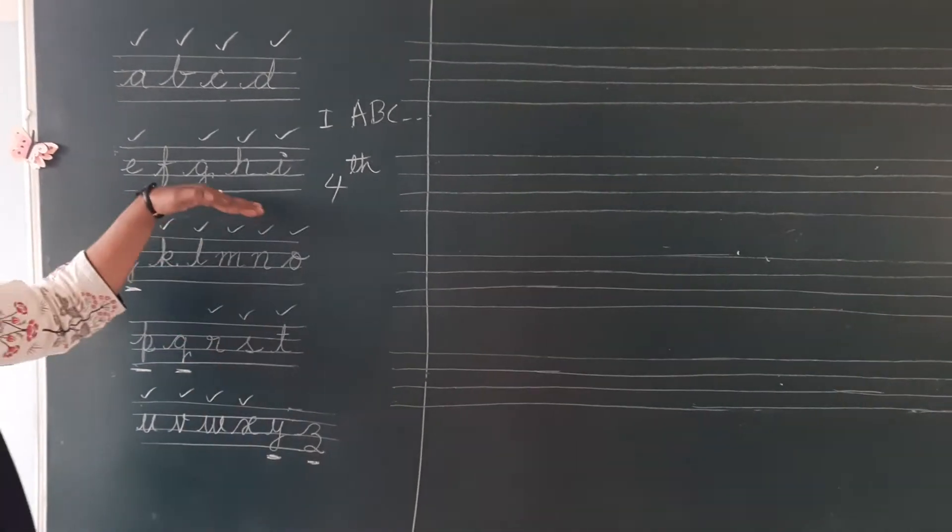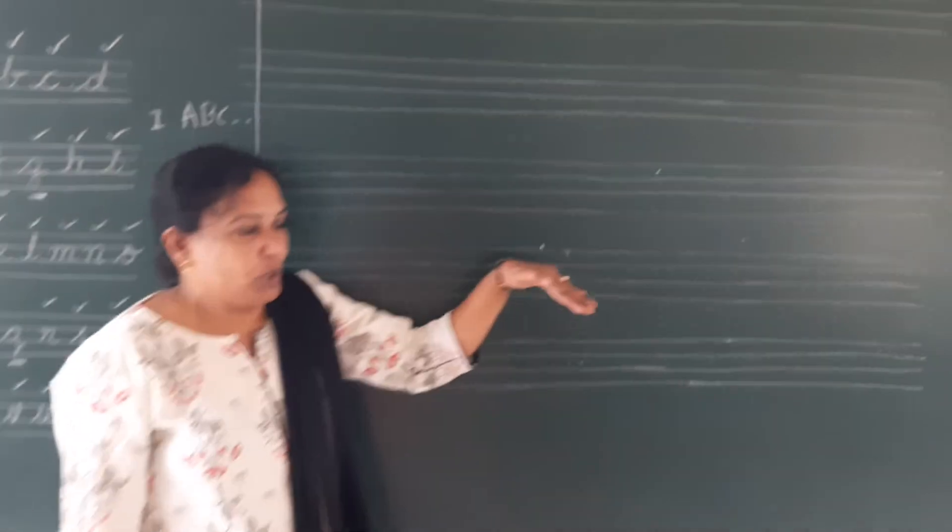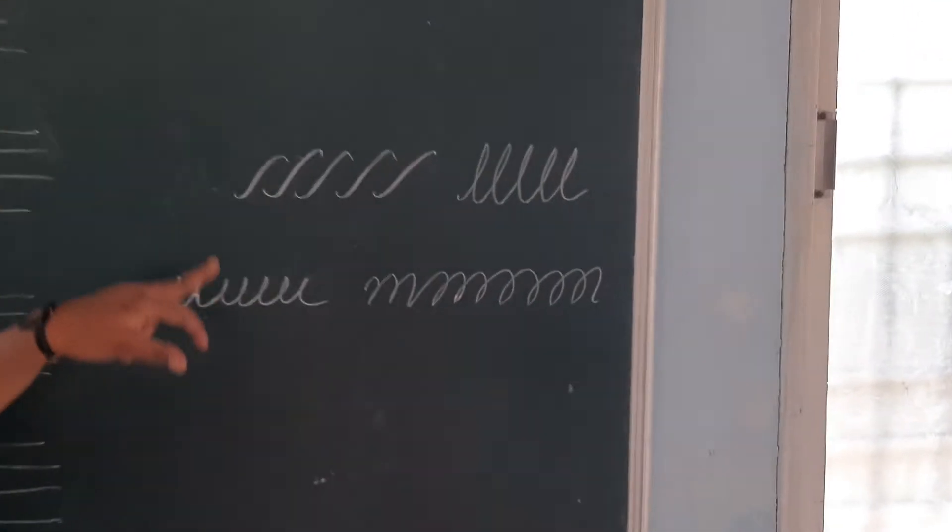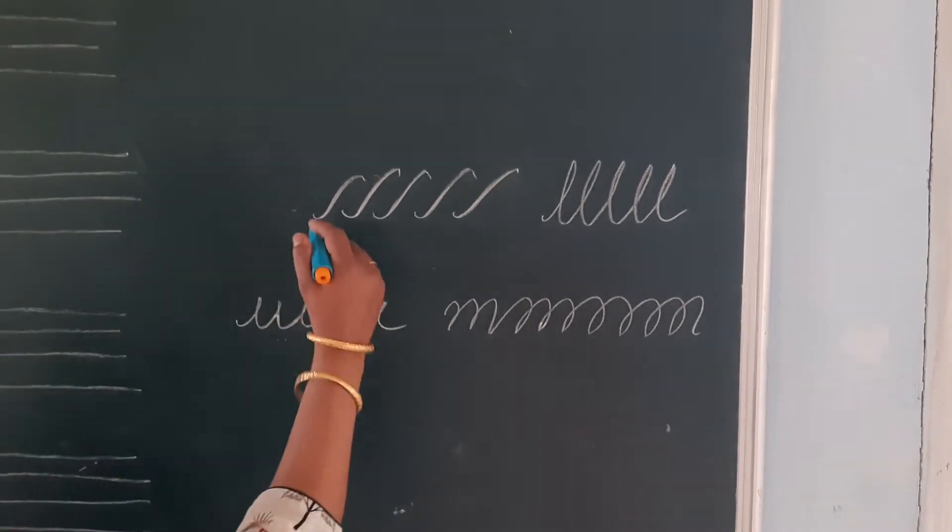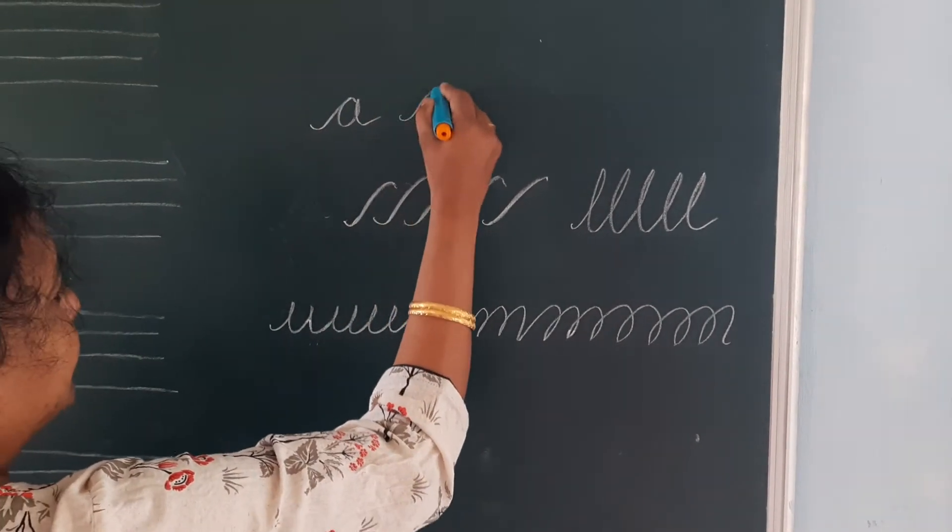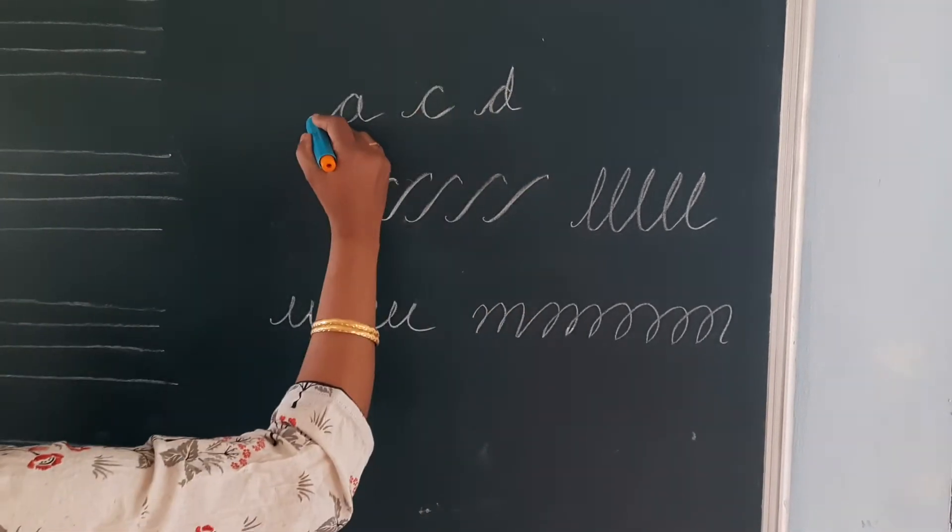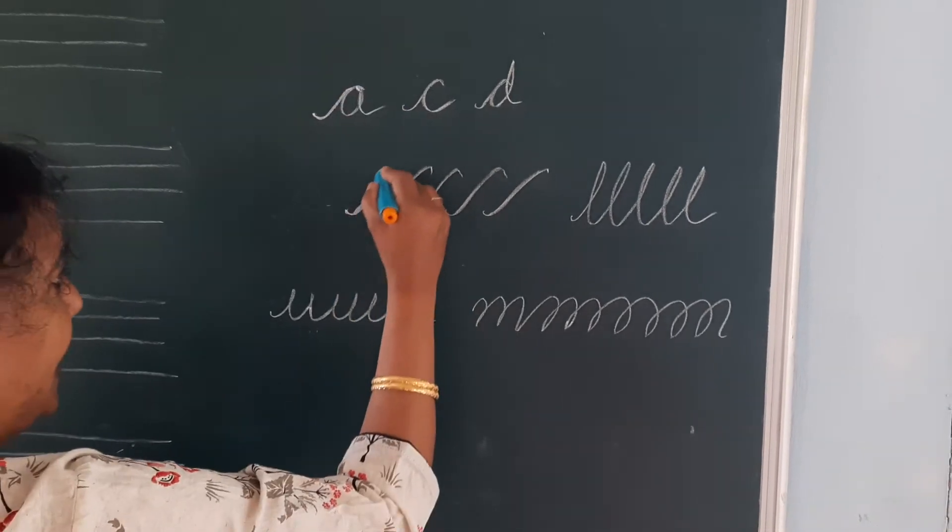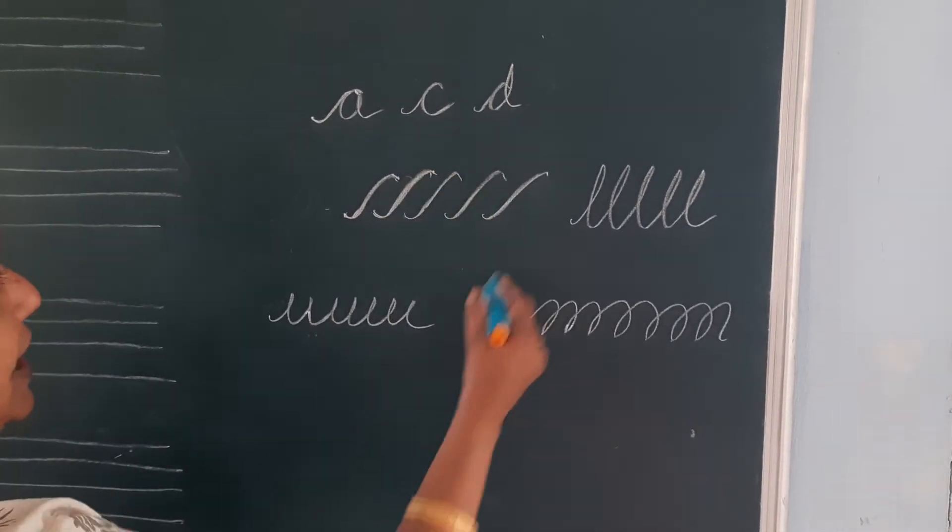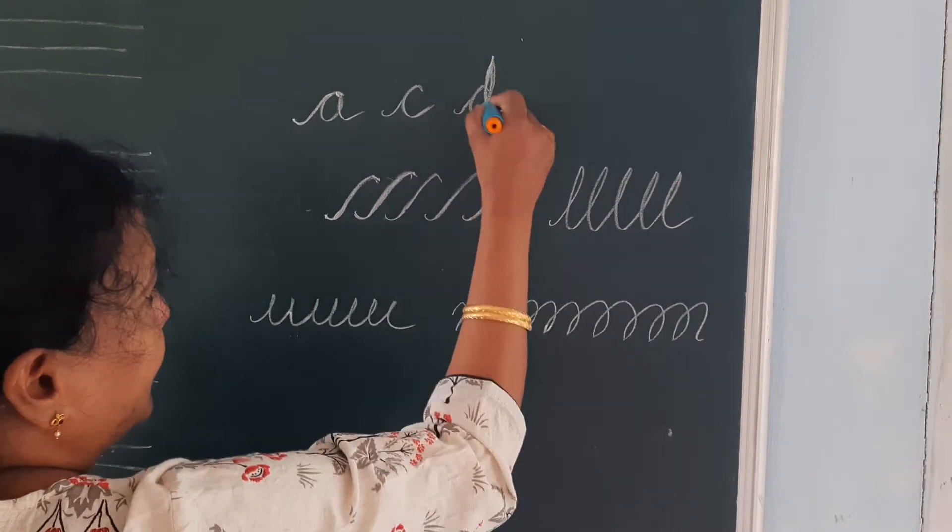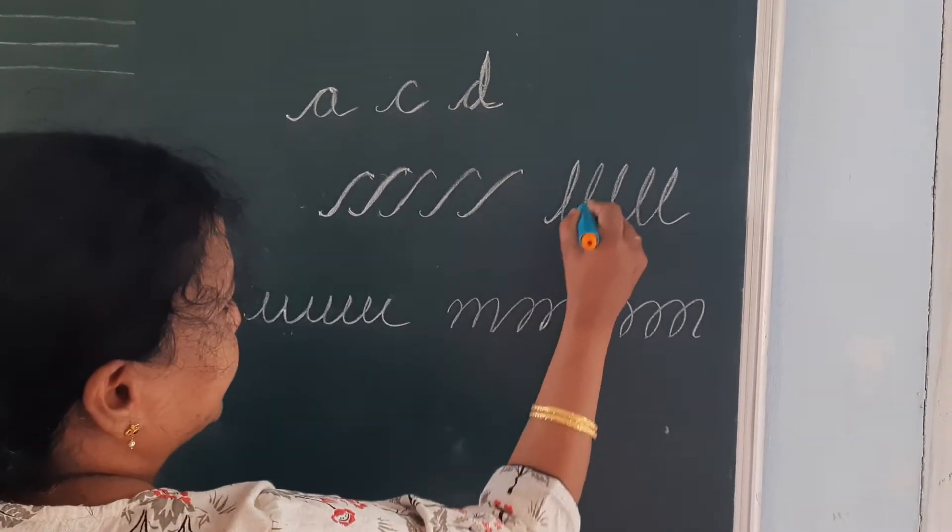And also, some more tips I want to tell you. Have a look on this. What is this? This is the starting stroke. Whatever letter we are writing - A, for example, C, for example, D. These letters, what we are giving? Yes, this is the starting stroke. That's what we have to practice this starting stroke. And also ending stroke means this one. How to practice this?